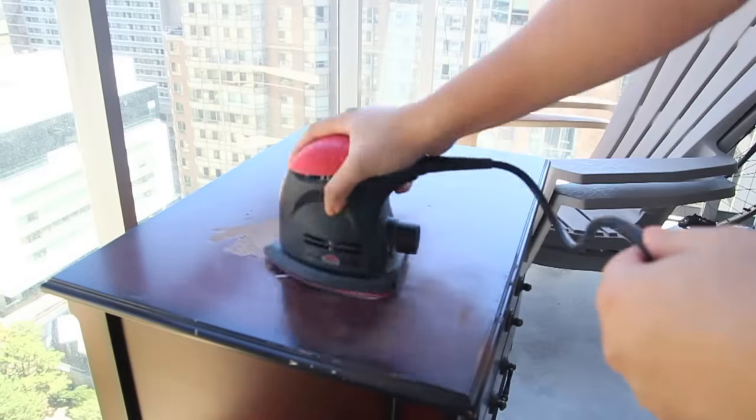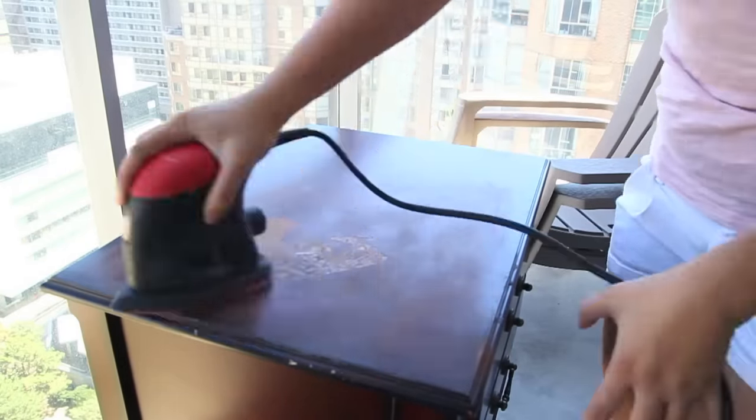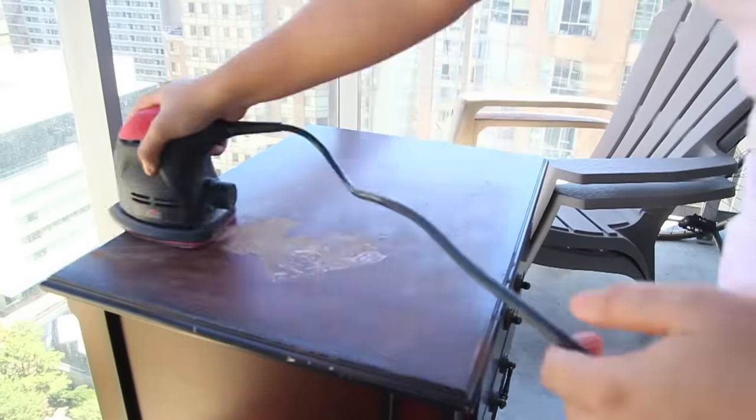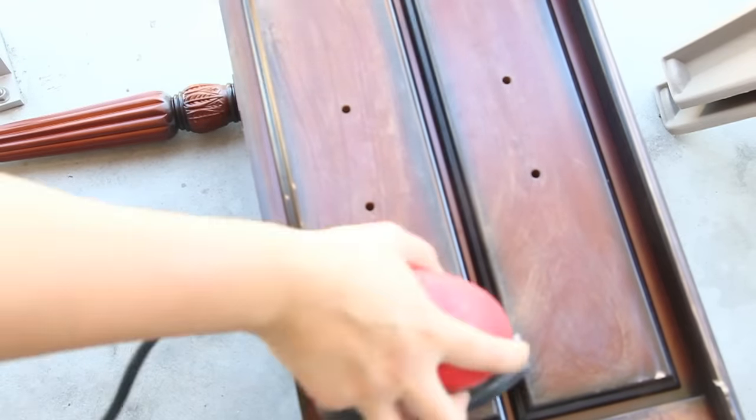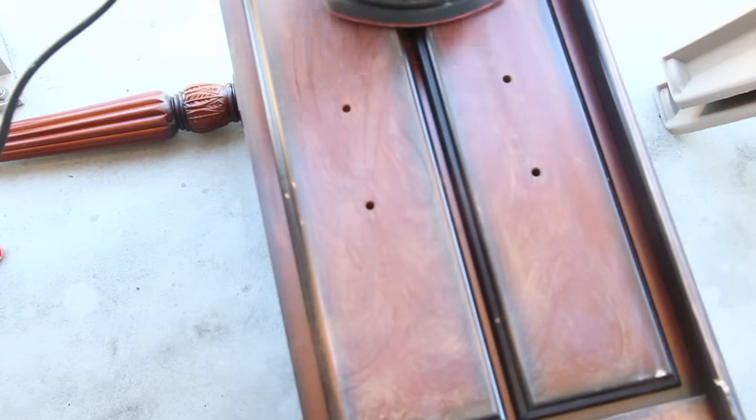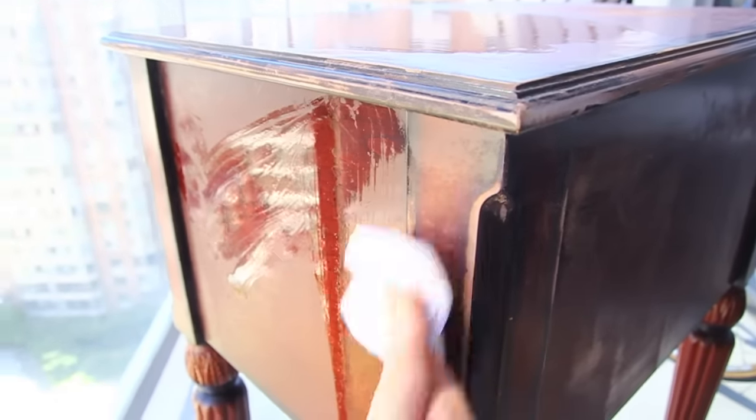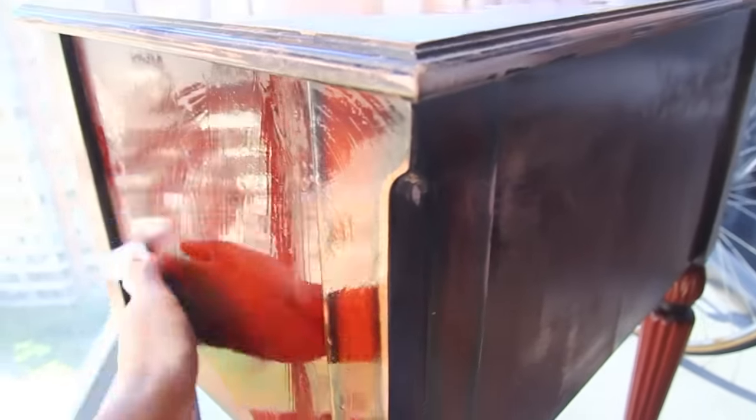So first you're going to sand down all of the surfaces. I'm using a 120 grit sandpaper. Roughing up the surface will help the primer and the paint stick a little bit better. Next you really want to wipe down your piece and get off all of that dust that came off from the sanding. Make sure you get into all the little nooks and crannies.